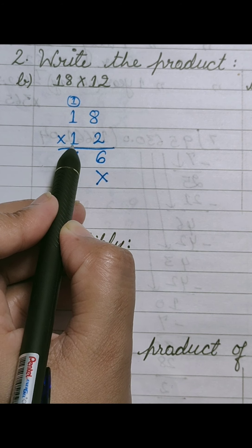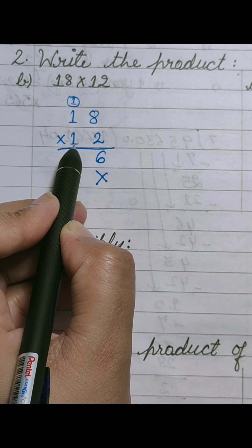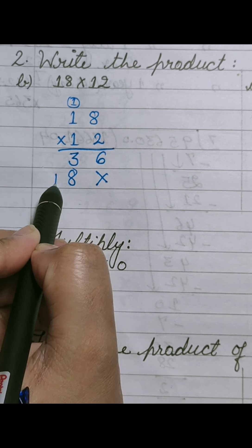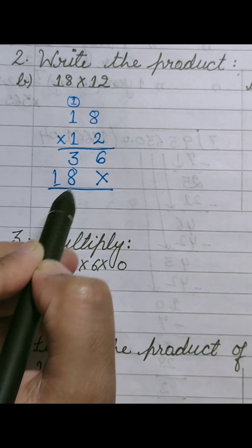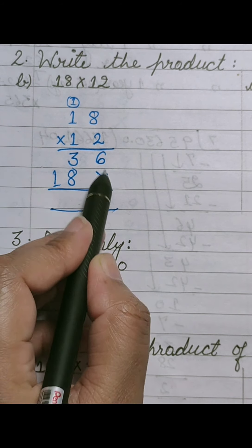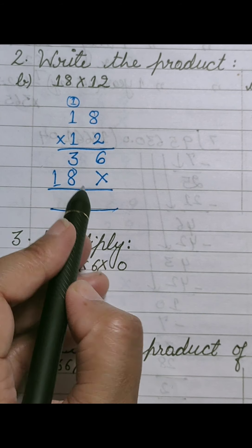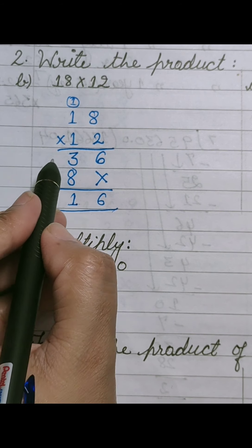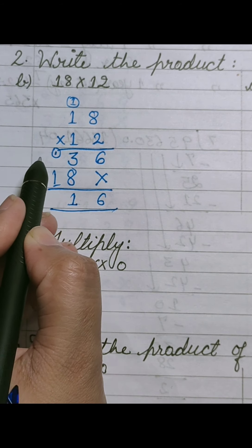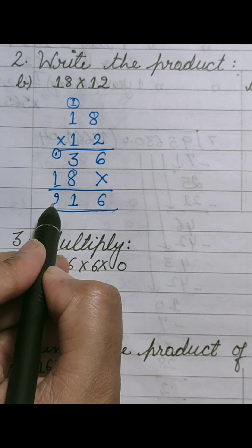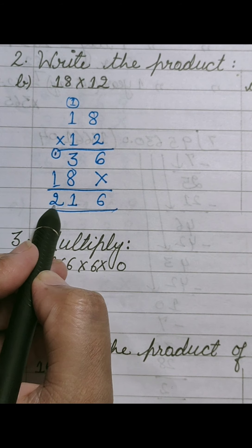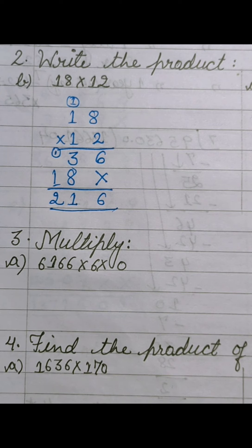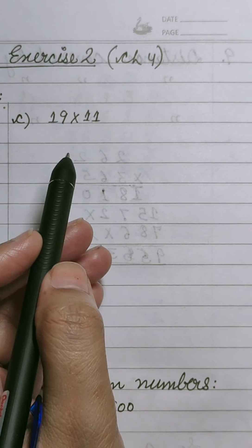Now multiply 18 by the tens place digit 1. 1 eight is 8; 1 one is 1. Last step is to add these numbers place-wise: 6 plus 0 is 6; 3 plus 8 is 11 — 1 carried over to hundreds place; 1 plus 1 is 2. So 18 multiplied by 12 is equal to 216.